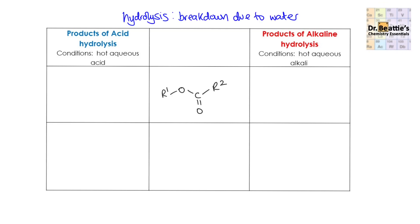If we take our generic ester configuration, we have the alkyl R groups — different in this case — and then we have our ester functional linkage. Under acidic conditions, the bond that breaks is this C-O bond. Just like in esterification, the carbonyl is really key. You look at the carbonyl group and then find the C-X bond — in this case it's a C-O bond — and you break that bond.